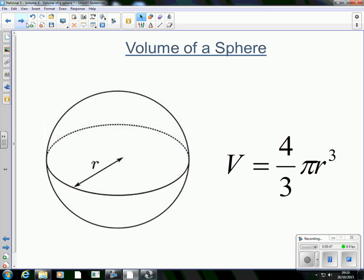There is only one thing you need to substitute in. 4 thirds, that's just a number, pi is just a number, the only thing you need is that radius. If you know the radius you can calculate the volume of a sphere.